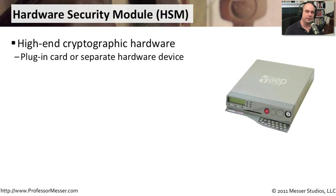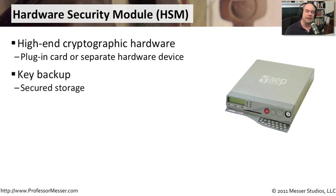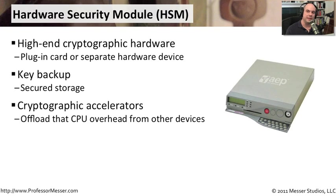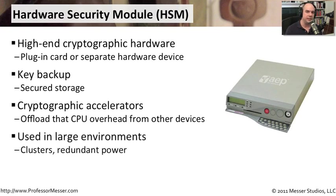When you get into large-scale or high-end cryptography, you'll often run into hardware security modules, or HSMs. You'll usually see them as plug-in cards or PCI-type adapters in a computer, or as a separate standalone hardware device. They can back up keys in a very secure environment and have cryptographic accelerators to offload encryption, decryption, and key management tasks. HSMs are used in large environments with heavy cryptography — financial organizations, credit card processing, and similar. They can be clustered together with redundant power, so even if you lose one, cryptography functions continue to operate.